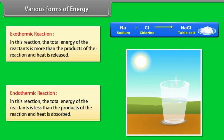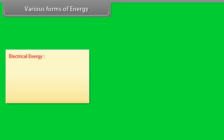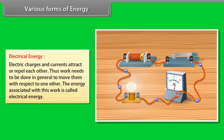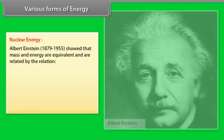Electrical energy. Electric charges and currents attract or repel each other. Thus work needs to be done in general to move them with respect to one another. The energy associated with this work is called electrical energy.